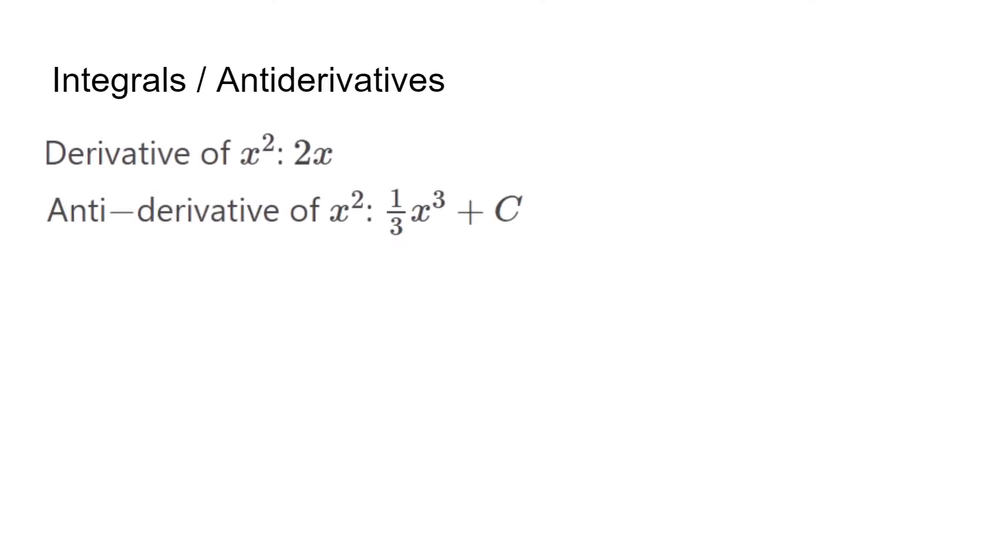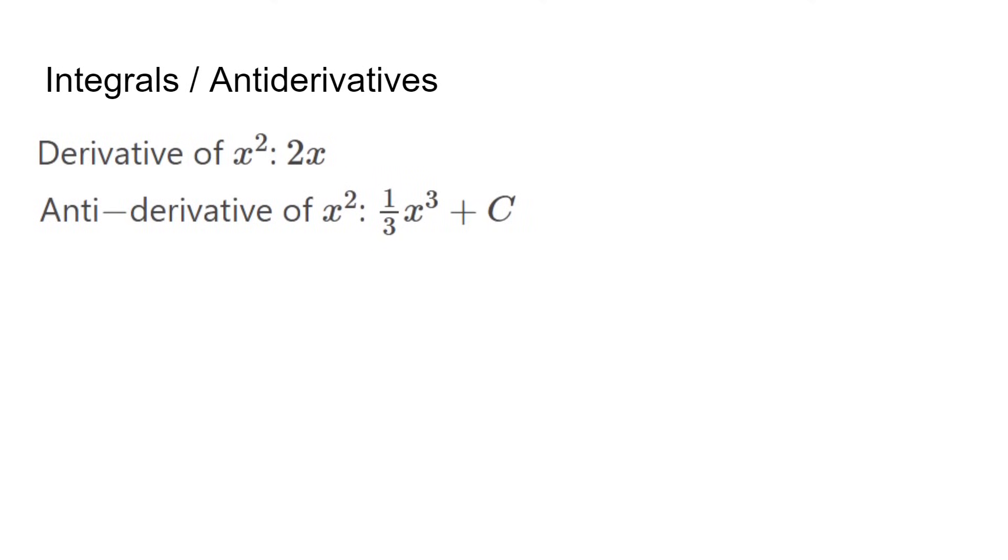Let's start with, what is an integral? An integral is the opposite of a derivative. Let's say a velocity function is given by x squared. Its derivative, acceleration, is 2x. Its anti-derivative is 1 third x to the power of 3. As you can see, we are anti-differentiating and increasing the power of the function instead.